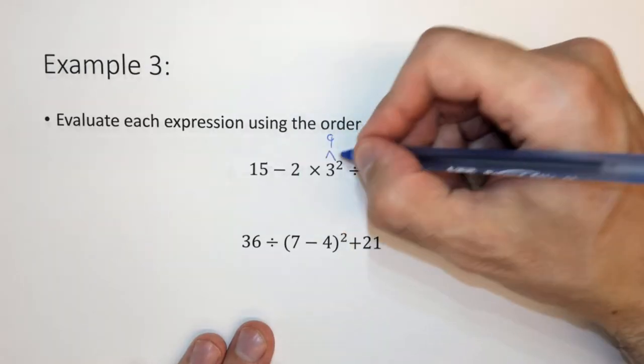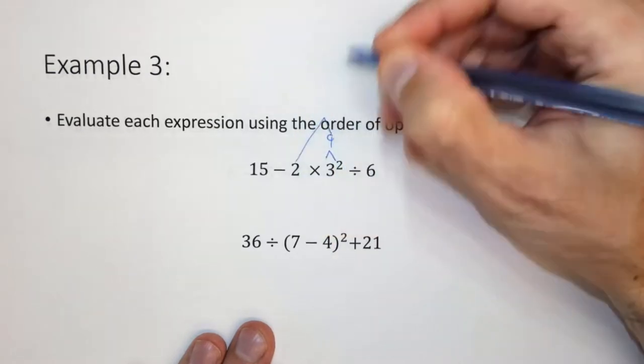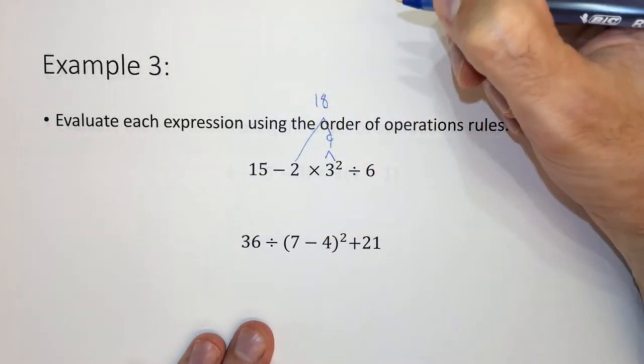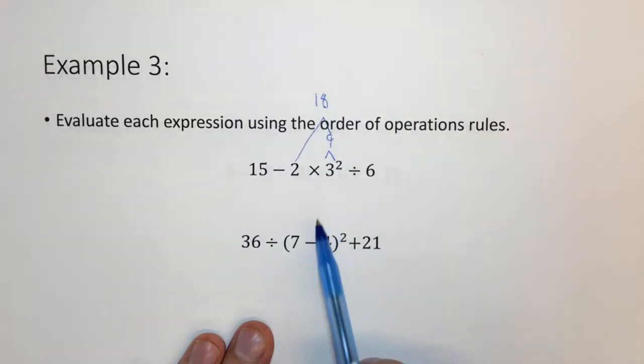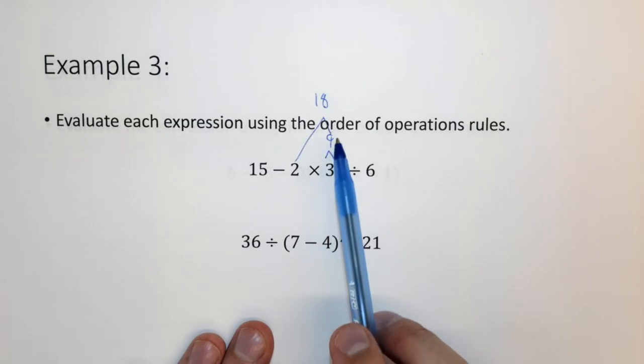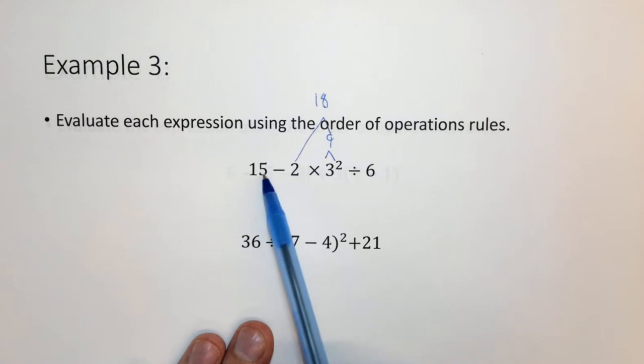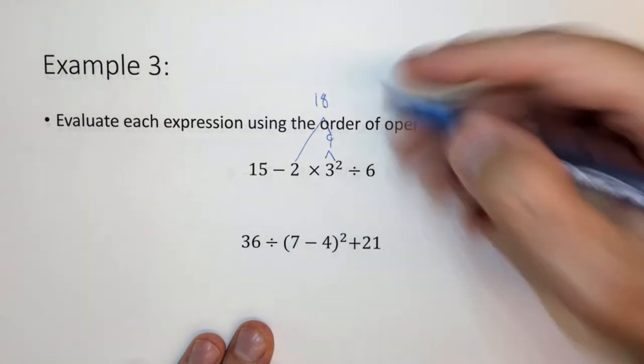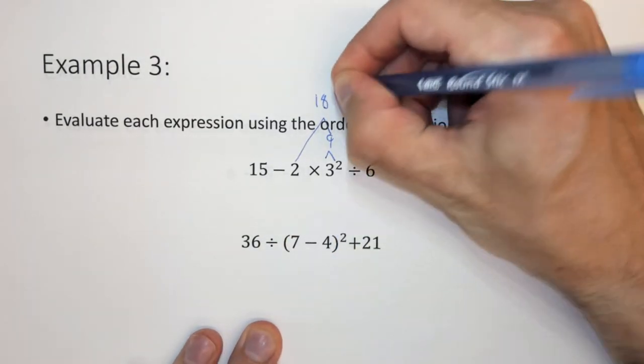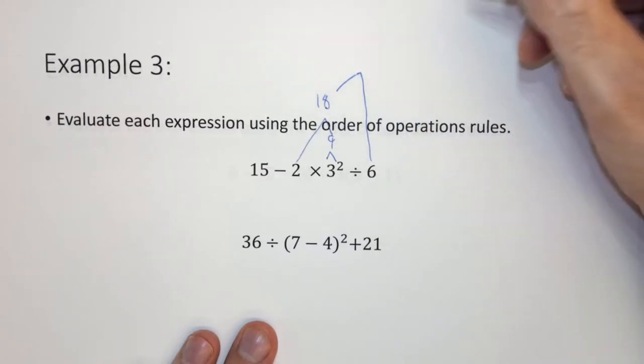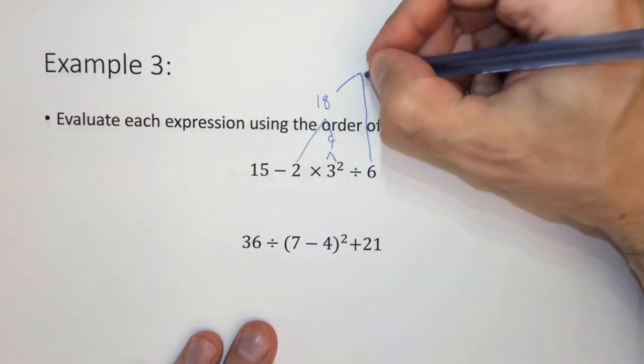Now we want to take 2 times the 9, which is 18. Once we have the 18, we then want to divide it by 6 before we do the subtraction, because that is a higher order thing. So I'm putting it up here so we can see it. 18 divided by 6 is 3.